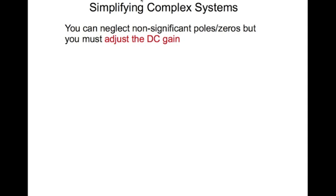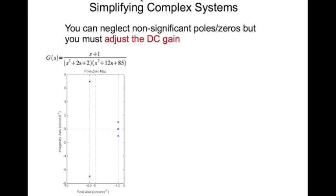Using that concept, you can simplify complex systems by neglecting the insignificant poles and zeros, but you must adjust the DC gain. Consider this complex fourth-order system: the poles from one term and the zero from another term are at minus one — a distance of one from the imaginary axis. The poles from another term are at minus six.